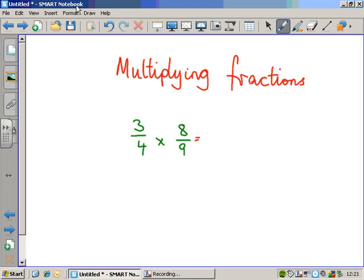We can cancel here by finding any numerator and any denominator that have a common factor. So for example, here, the numbers 4 and 8 can both be divided by 4, can't they? If we divide 8 by 4, we get 2. If we divide 4 by 4, we get 1.